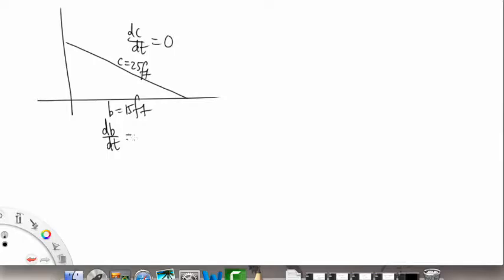So I'll draw a little quick sketch of what we have right now. Something like that. We know C equals 25 feet. We know dC/dt equals 0. We know that B is equal to 15 feet, so this is a good refresher. dB/dt is equal to positive 3 feet per second because it's growing, right? B is growing.